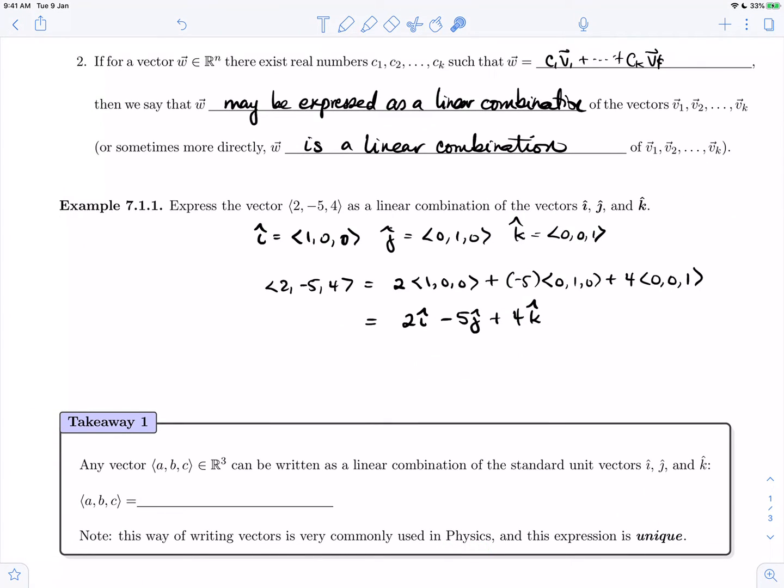Now, this is probably very familiar to you from physics. This is exactly the notation most commonly used in physics. So we have as our first takeaway that any vector (a, b, c) in R^3 can be written as a linear combination of the i, j, and k-hat vectors: (a, b, c) = a times i-hat plus b times j-hat plus c times k-hat. In particular, I want us to notice that this expression is unique.